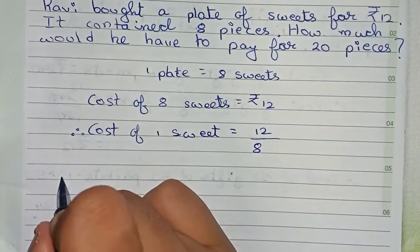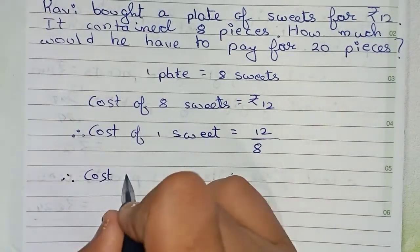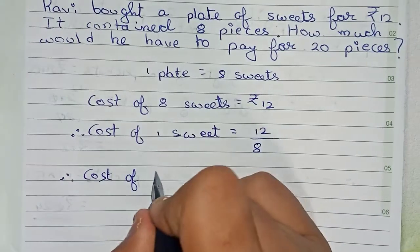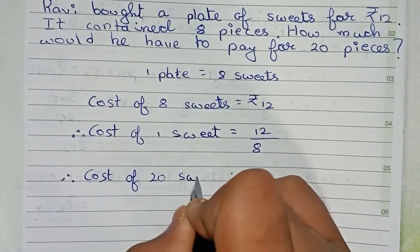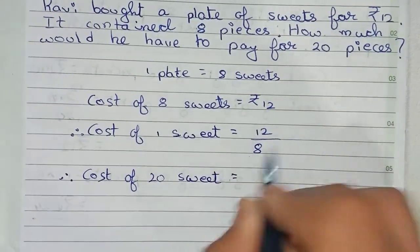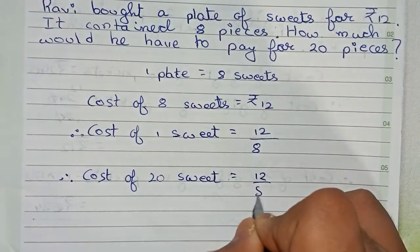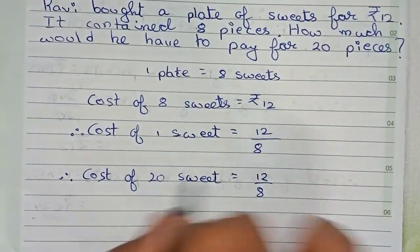Now the cost that you have to find is for 20 sweets. So cost of 20 sweets equals 12 by 8, the cost of one sweet, into 20.